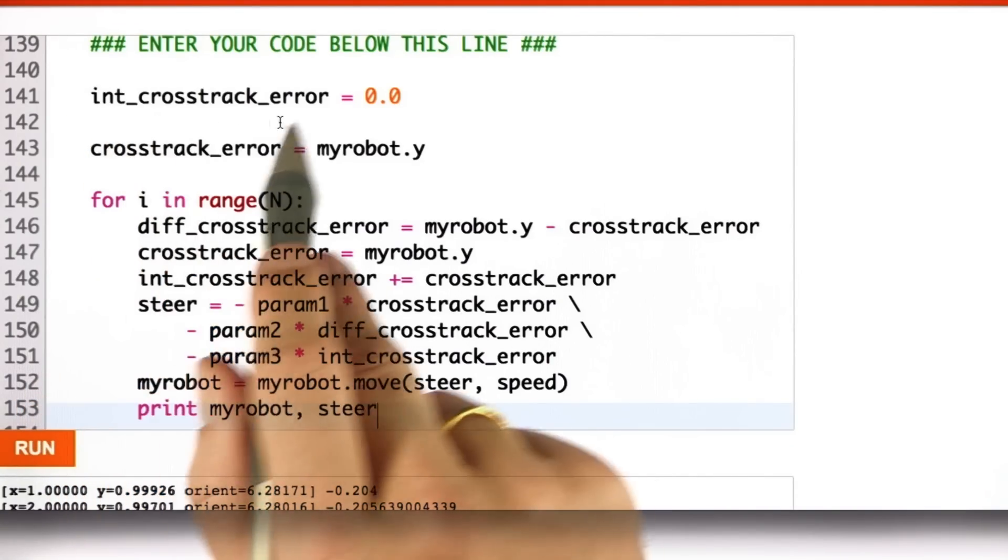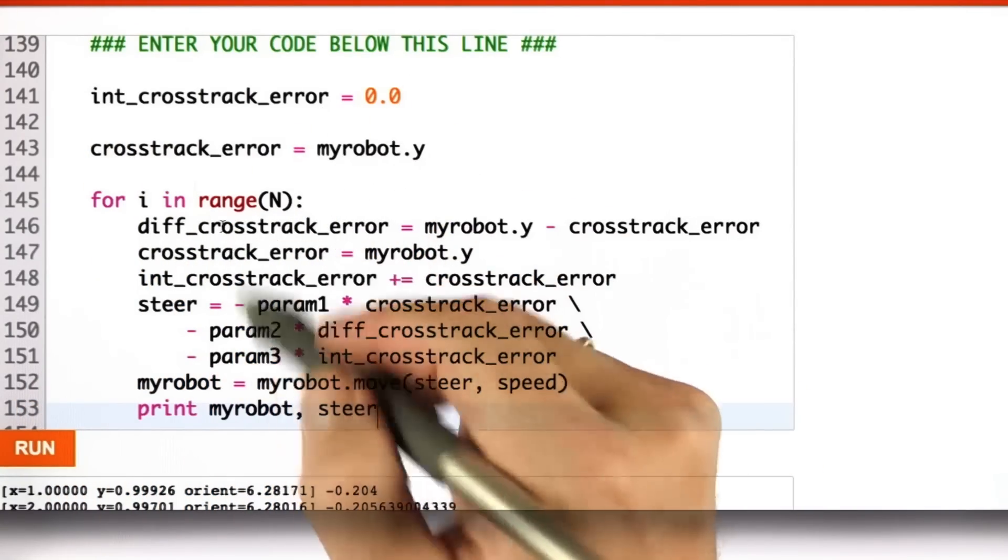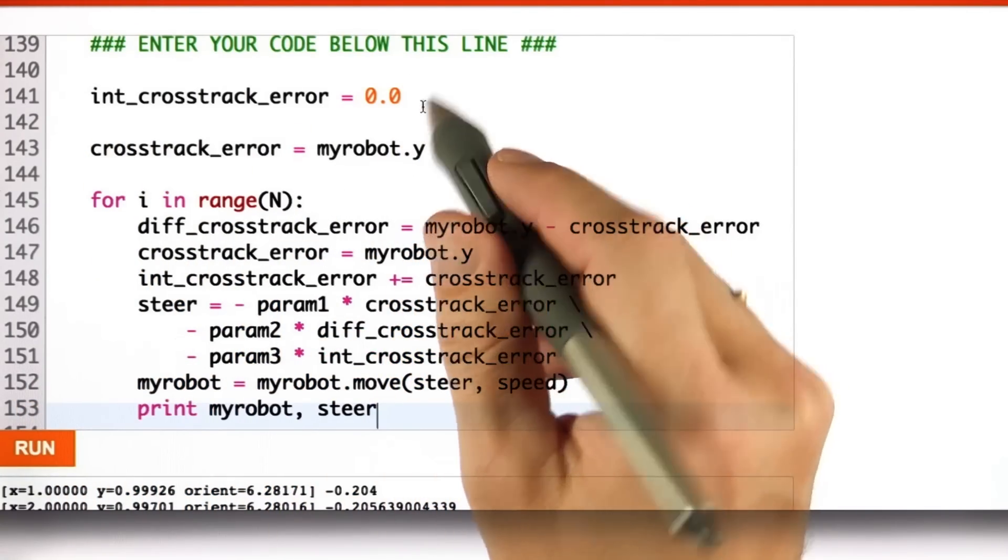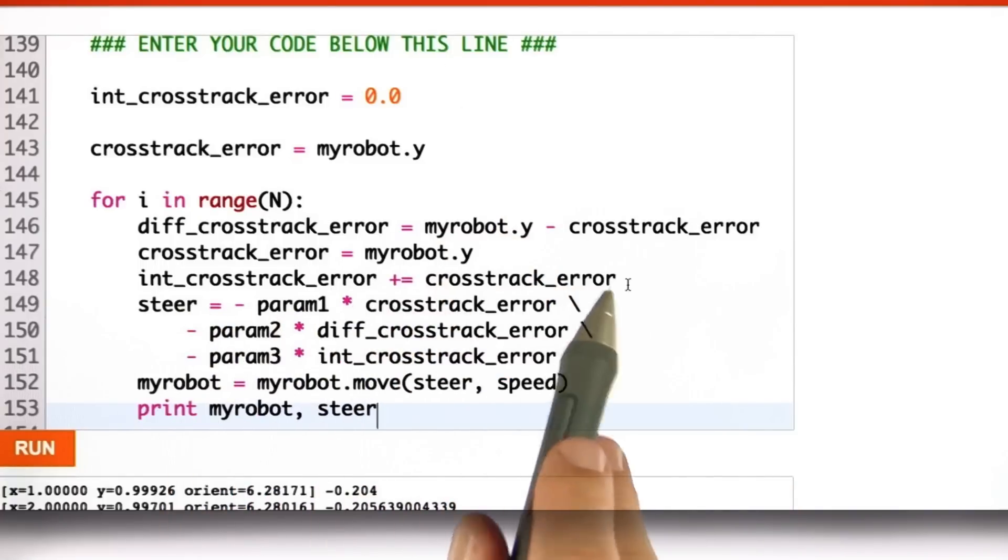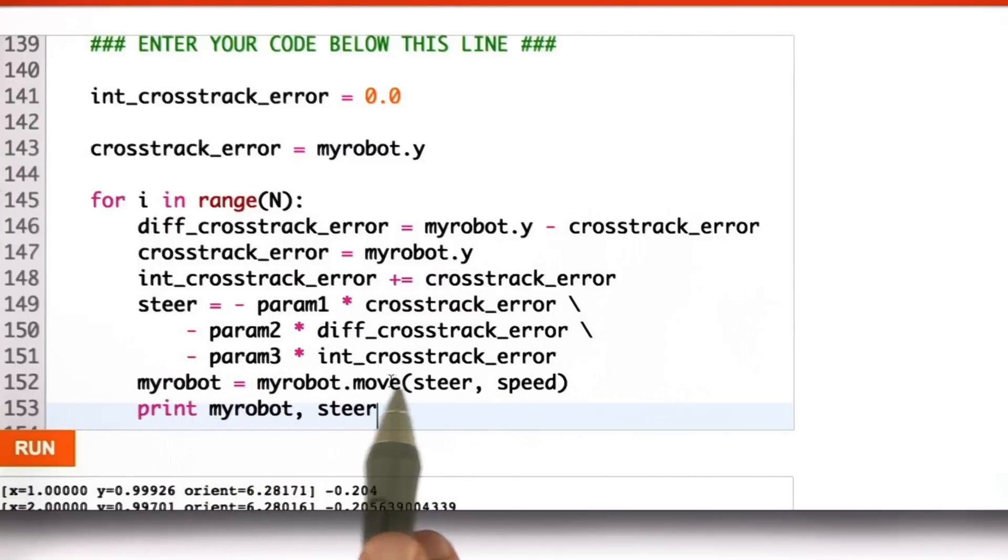And here's my solution. I implement a variable int_crosstrack_error outside my main loop that initializes with 0. I then add to the int_crosstrack_error my local cross-track error. And then I have a controller that steers in proportion to the int_crosstrack_error.